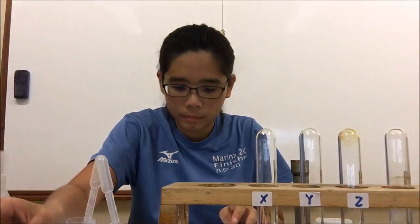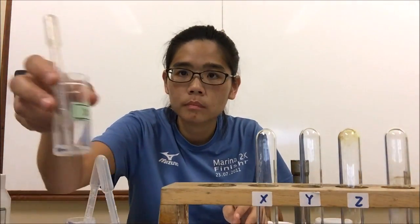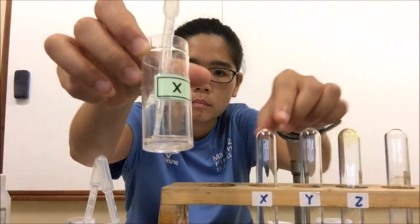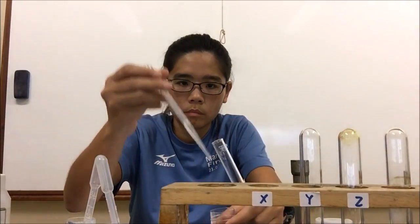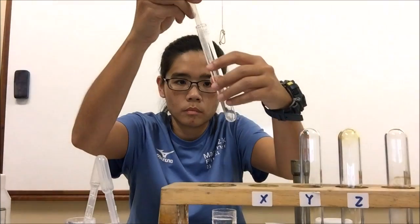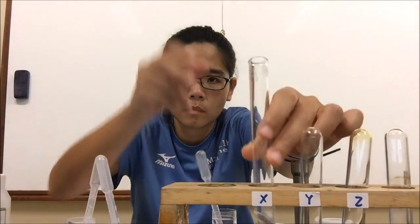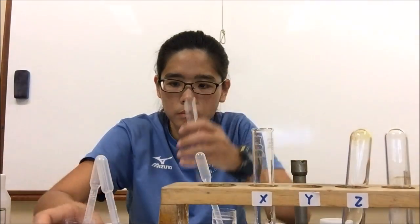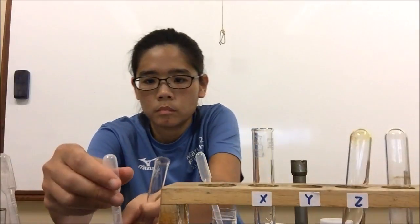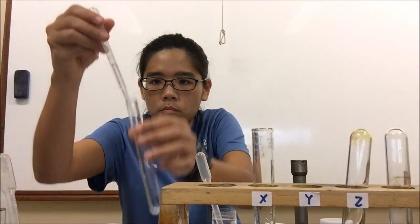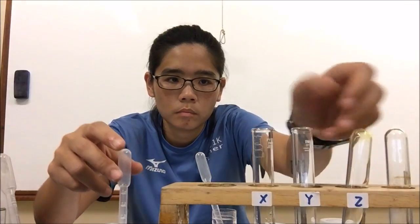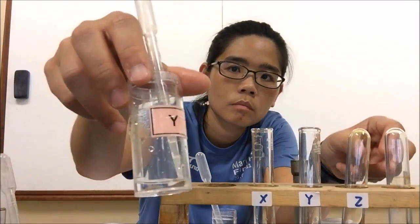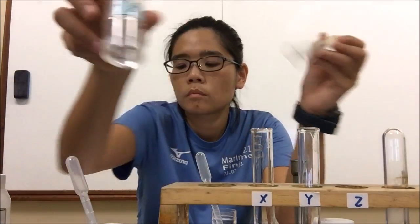I add 1 cubic centimeter of solution X into a stoop, then 1 cubic centimeter of solution Y. I put the droppers back in the bottle so that I don't contaminate them — one dropper for each solution. I also add 1 cubic centimeter of solution Z. So prepare equal amounts of each of the solutions.